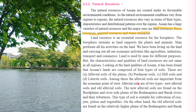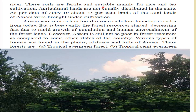Among these, alluvial soil is very important because it is very fertile. Alluvial soil is of two types: new alluvial soil and old alluvial soil. New alluvial soil is found along the riverside plains, banks, and tributaries of the Brahmaputra and Barak rivers, where mainly rice, jute, pulses, and vegetables are grown. The old alluvial soil is found a little away from the river banks, supporting rice and tea cultivation. As per 2009-10 data, about 35% of the total lands of Assam were brought under cultivation.